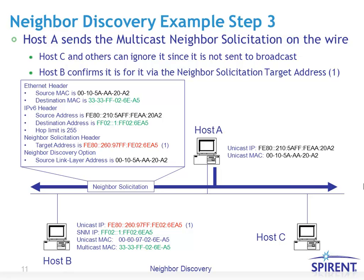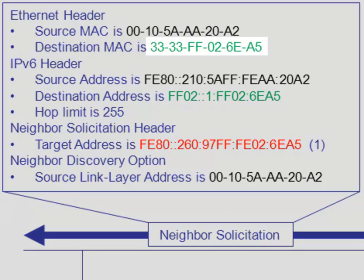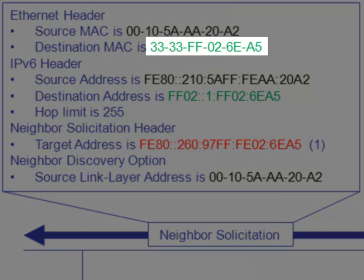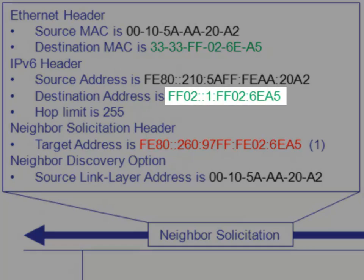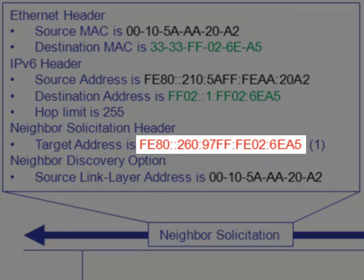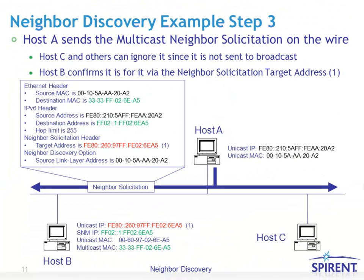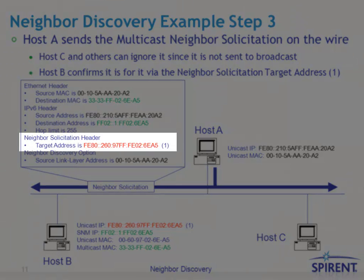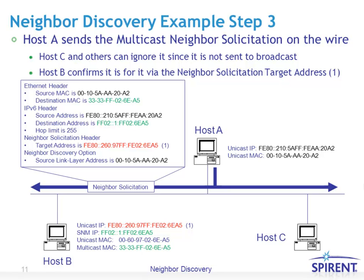In step three, having determined all necessary information, host A sends the multicast Neighbor Solicitation onto the wire. That solicitation packet propagates in all directions, so both host B and C will see it. But only host B will be listening to destination MAC address 3333FF0260EA5, derived from host B's SNM address, which was derived from host B's unicast IP address. Host B can also double-check the neighbor solicitation header's target address — the FE80 address — to confirm the packet is indeed for host B.